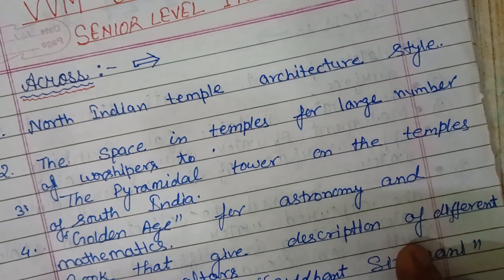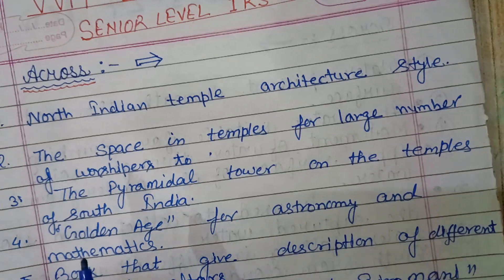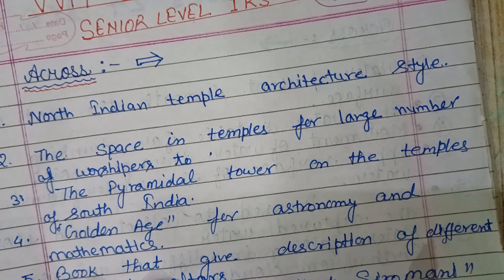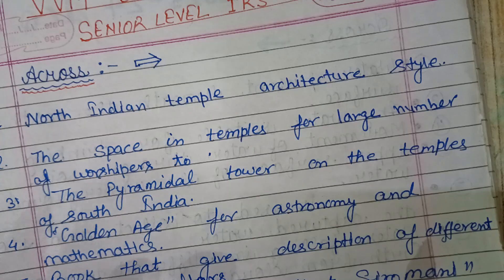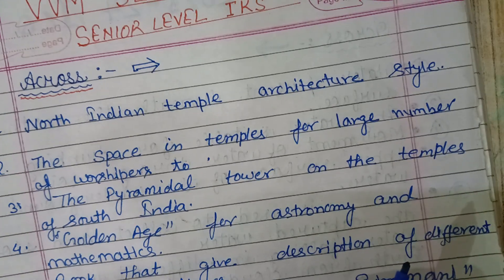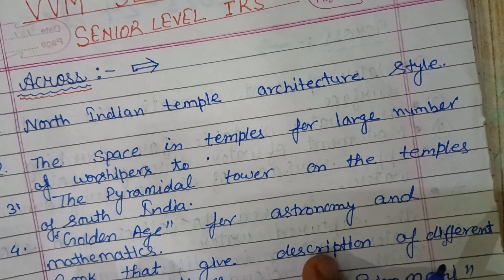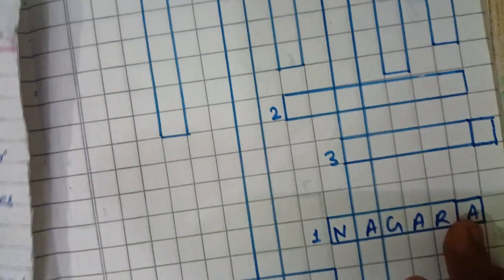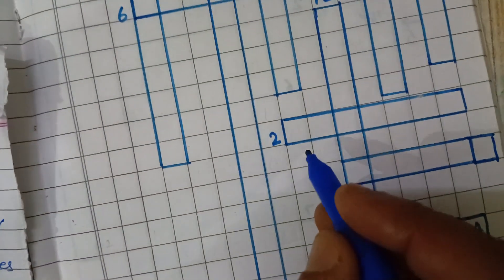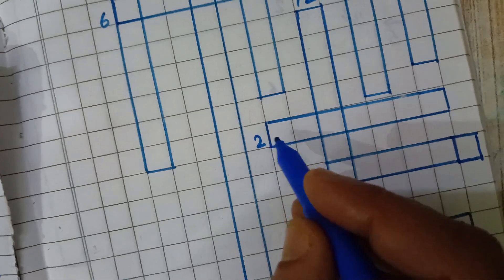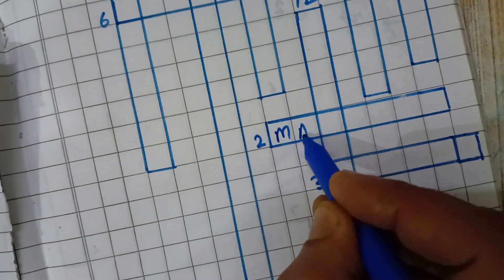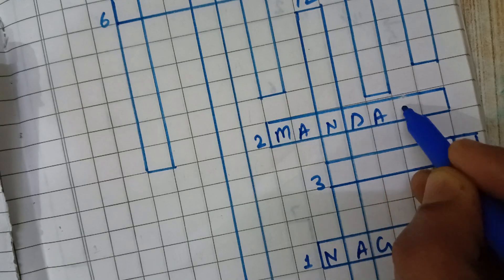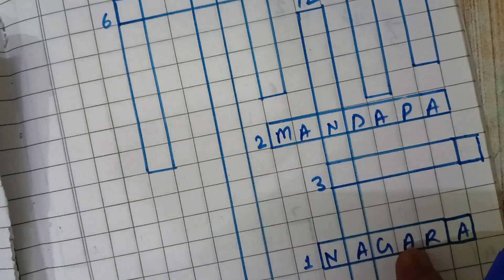Second question: The space in temples for a large number of worshippers to sit or stay is known as Mandap. Second answer: M-A-N-T-A-E-A — Mandap.